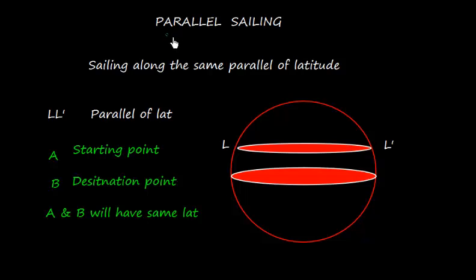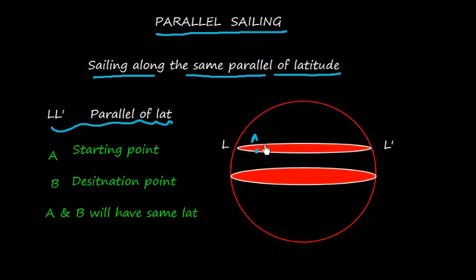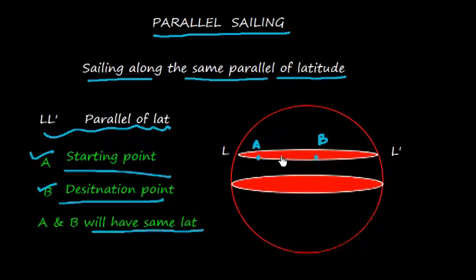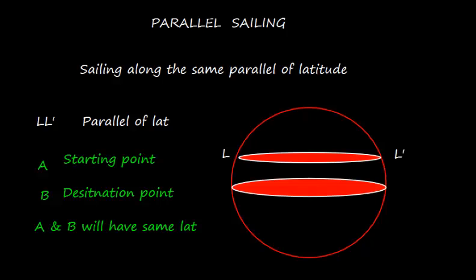In this video, I am going to discuss about parallel sailing. This is the sailing along the same parallel of latitude. Here, L and L' represent the parallel of latitude. Suppose this is the starting point A and there is a destination point B. The starting and destination points are having the same latitude, so this kind of sailing is called parallel sailing.